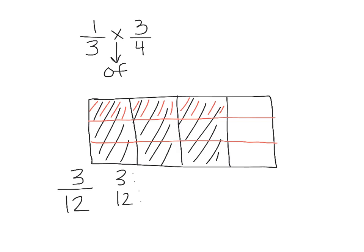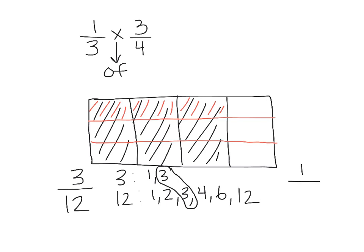The factors of three are one and three. The factors of twelve are one, two, three, four, six, and twelve. This time, three is our greatest common factor. So we're going to divide both three and twelve by three. When we divide three by three, we get one. When we divide twelve by three, we get four. So one fourth is our final and simplest answer.